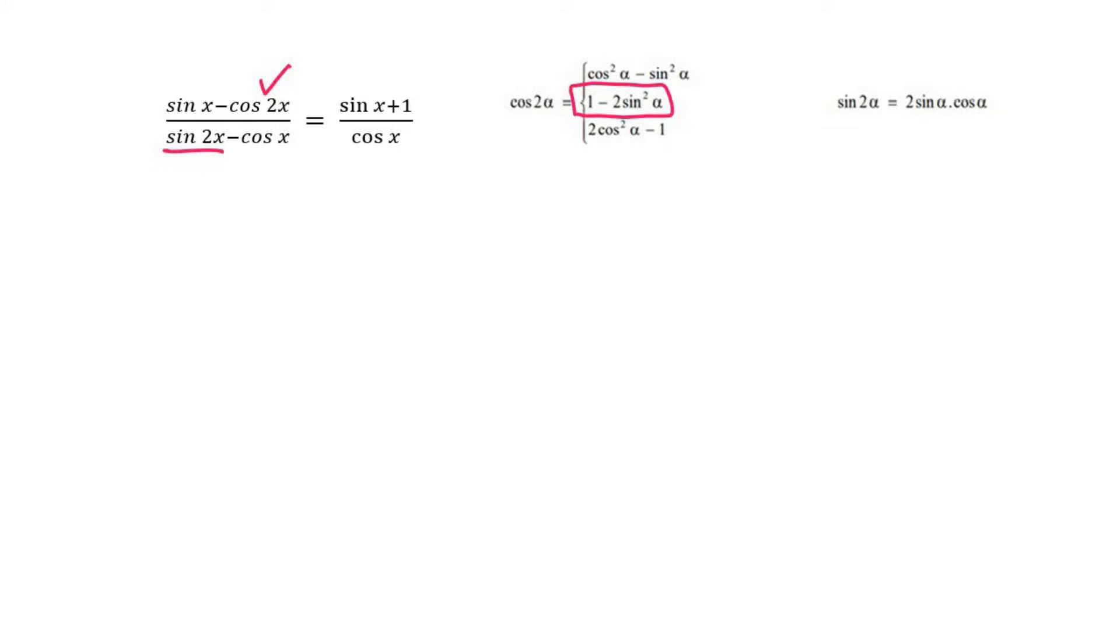And then whenever you have a sin2x, you want to change that one. So what we're going to end up with is sinx, or first we should say which side we're working on, but that's obviously the left hand side because you always work on the more complicated side. So we're going to say that sinx minus, now in brackets you're going to say 1 minus 2sin²x. It must be in brackets guys. And then at the bottom we're going to have 2sinx cosx minus cosx. Now we just want to simplify.